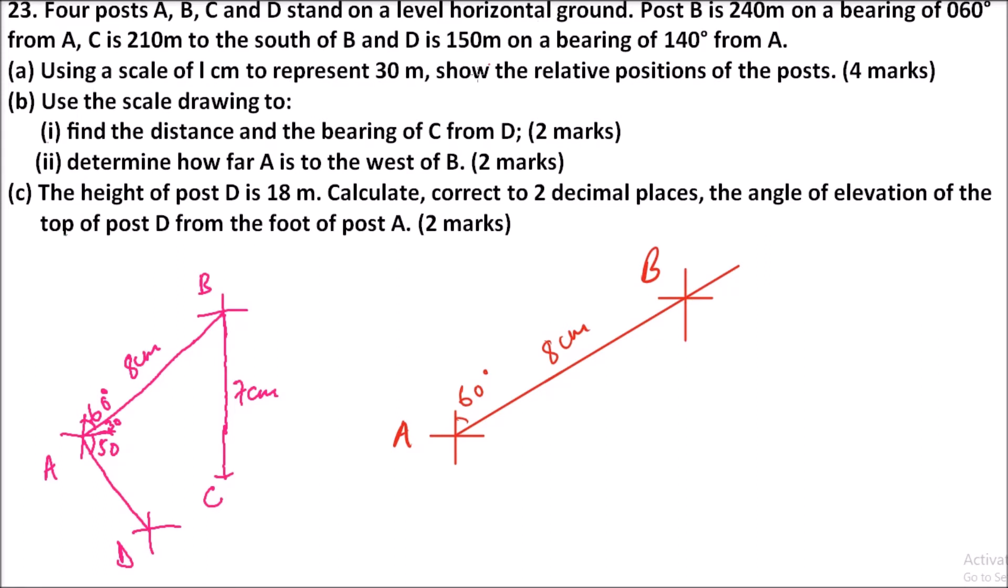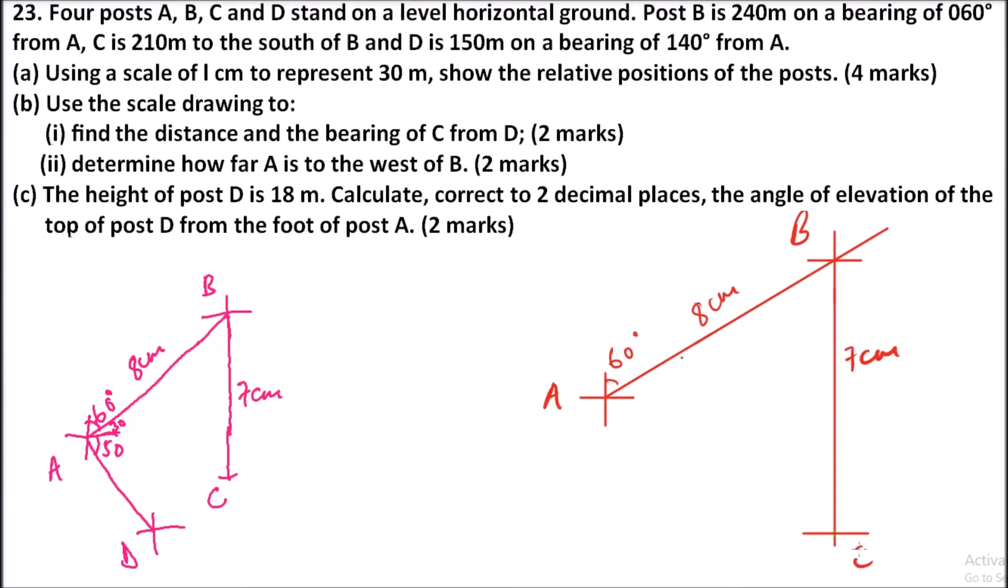South of B, so we need to extend this line here and then we measure seven centimeters to represent 210 kilometers. So this is where I have located my C. I have adjusted my diagram because of space. So this is seven from B downwards, southwards, seven centimeters to represent 240 meters.